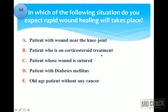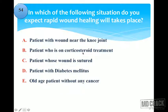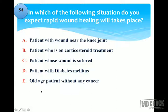Patients on corticosteroid treatment are immunosuppressed, and diabetic patients are also immunocompromised — so proper wound healing cannot be expected in either case. A patient whose wound is sutured means care was taken, aseptic precautions followed, and the two wound ends approximated. Old age patients and cancer patients also have immunosuppression. Therefore, the correct answer is the patient whose wound is sutured.